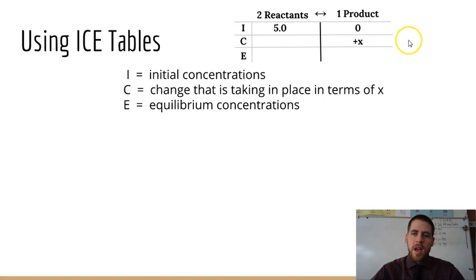So we'll just put in x, and then if we're changing it by an amount of x, then that means we're going to end up with x if we start at zero, right? If we're increasing our products by x, then that means we're decreasing our reactants by 2x because there's a 2 in our balanced equation. And so our equilibrium concentration of our reactant in this case would be 5.0 minus 2x. So that's kind of the general format that we're going to follow.